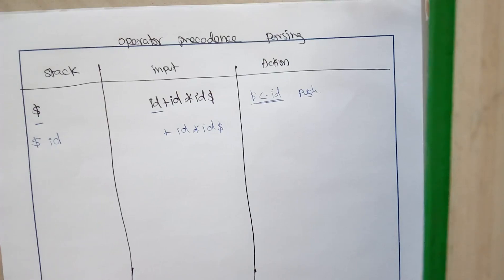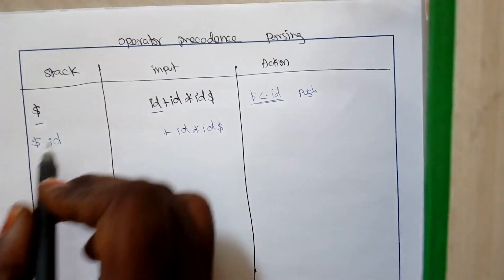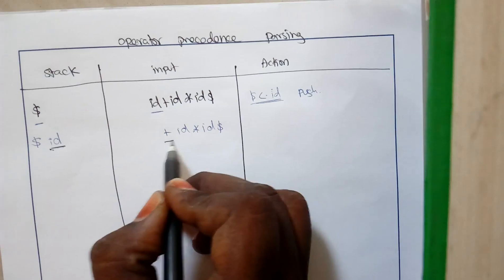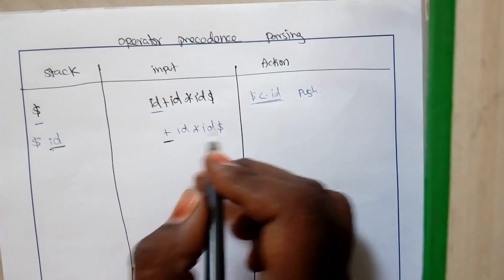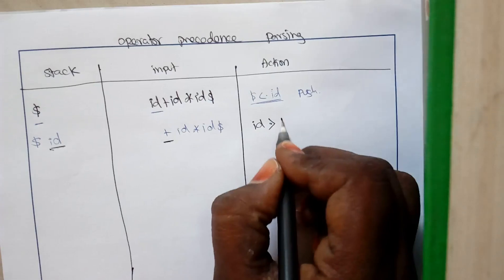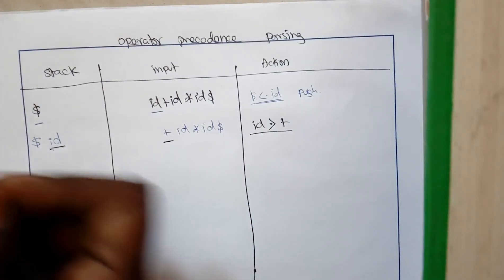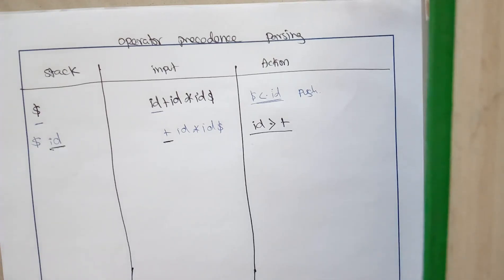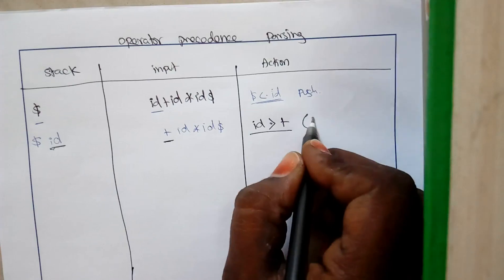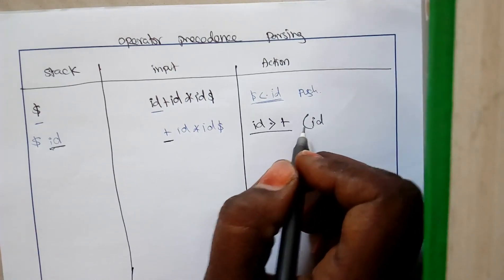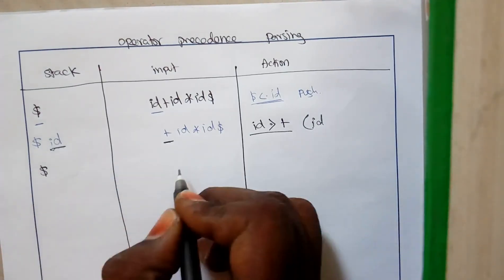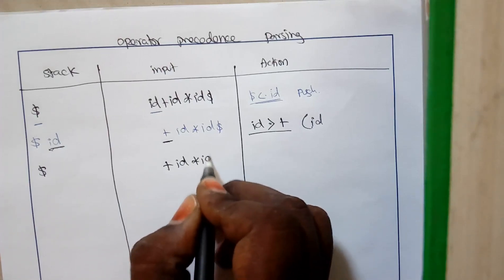Whenever you have a greater precedence — for example, when you compare id with plus, id has a greater precedence over plus — we have to pop the element out of the stack and reduce it. If there is any action to be performed we perform that action, otherwise we just place that element separately. So now id is the element we are going to remove, making that list id alone. The remaining stack has dollar, and the input is plus id star id dollar.